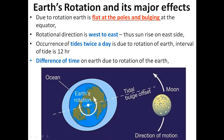Now we will understand Earth's rotation and its major effects. Due to rotation, the Earth is flat at the poles and bulges at the equator. As you can see in this diagram, the Earth has been shown from the zenith position at the North Pole. This arrow represents the direction of rotation from west to east. The blue shaded part represents the water bodies — the ocean — which is bulged in a certain direction.